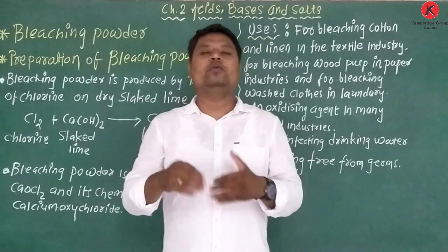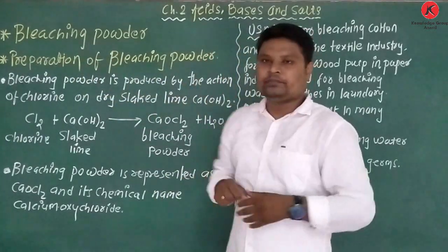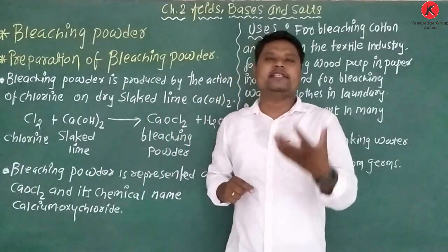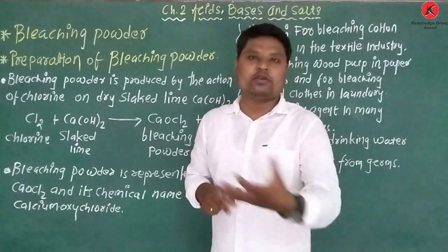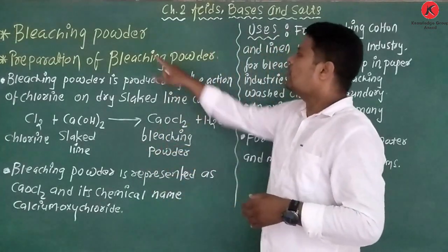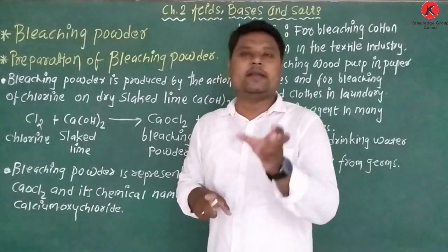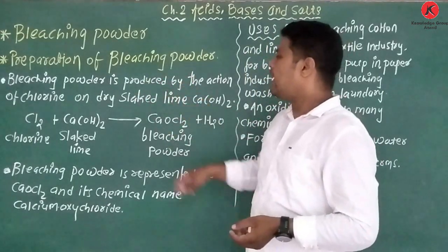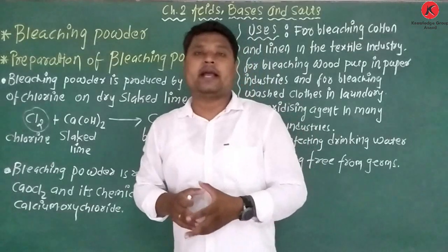Bleaching Powder. How to prepare Bleaching Powder? It has a very easy formula, which is produced by the action of chlorine on calcium hydroxide in a combination reaction.